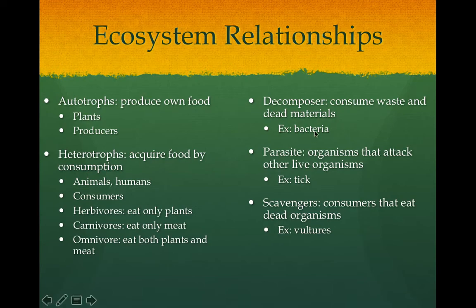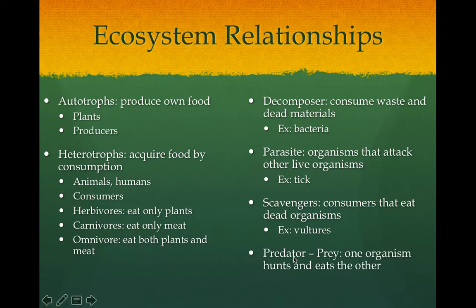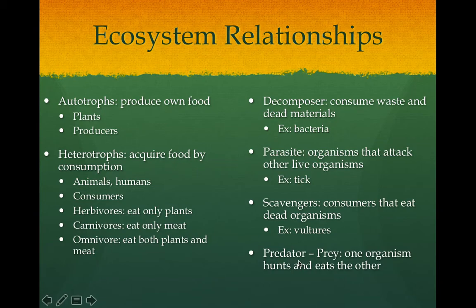Scavengers are not to be confused with decomposers, but they also get their food from dead organisms. Unlike bacteria and fungi which break material down and return it to the soil, scavengers just eat the flesh off of the dead organism. Examples would be vultures or crows that you see by dead animals in the road — they're eating the meat and leaving the bones for decomposers. The last thing we're going to talk about is predator and prey. A predator is an organism that hunts and kills something, and prey is the organism that gets eaten. This is different from a parasite because a predator actually kills the animal it eats for food.